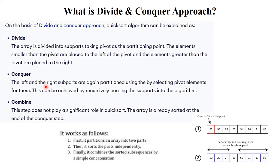The conquer step means the left and right subparts are again partitioned by selecting pivot elements for each, achieved by recursively passing the subparts into the algorithm. After partition, there are two parts — left and right. You again find the pivot in each part; for example, if 13 is the pivot in the left part, 2 goes to the left of 13 and 20 to the right. The combine step does not play a significant role in quick sort — it is mostly used in merge sort. The array is already sorted at the end of the conquer step.